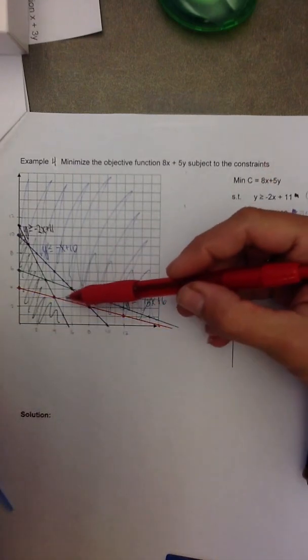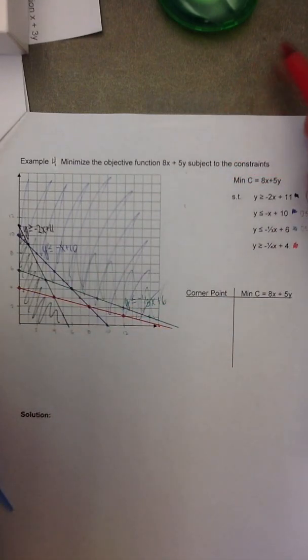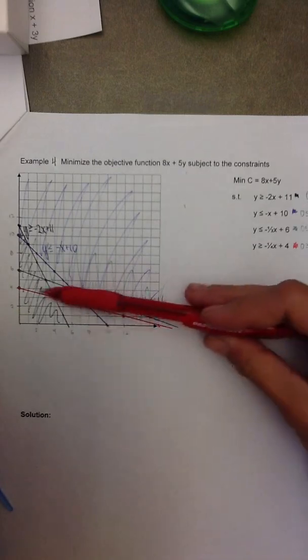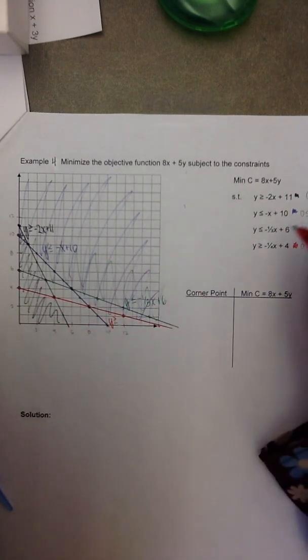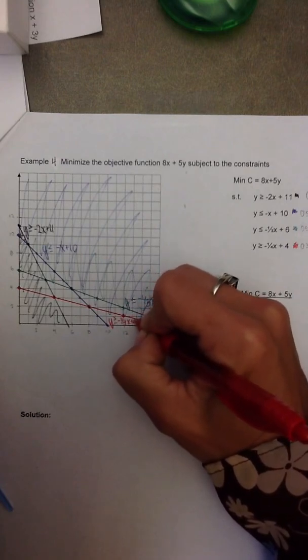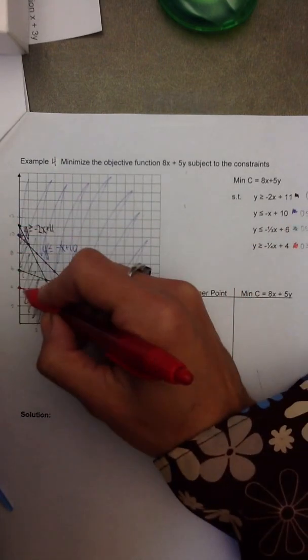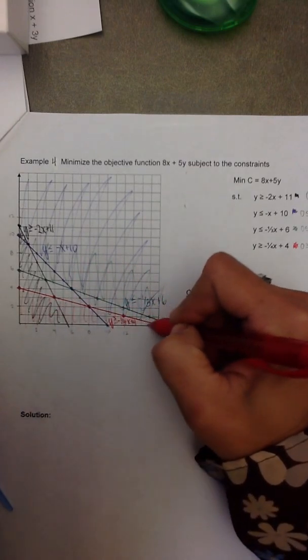When I do that, I can tell that either this or this is going to be my feasible set. But until I plug in a test point, again, 0,0. 0 is greater than or equal to 0 plus 4. That's 0 is greater than or equal to 4, which is false. That means points below this line, which is y is greater than or equal to negative 1 fourth x plus 4, beneath the line is false. So I cross out or shade beneath the line.